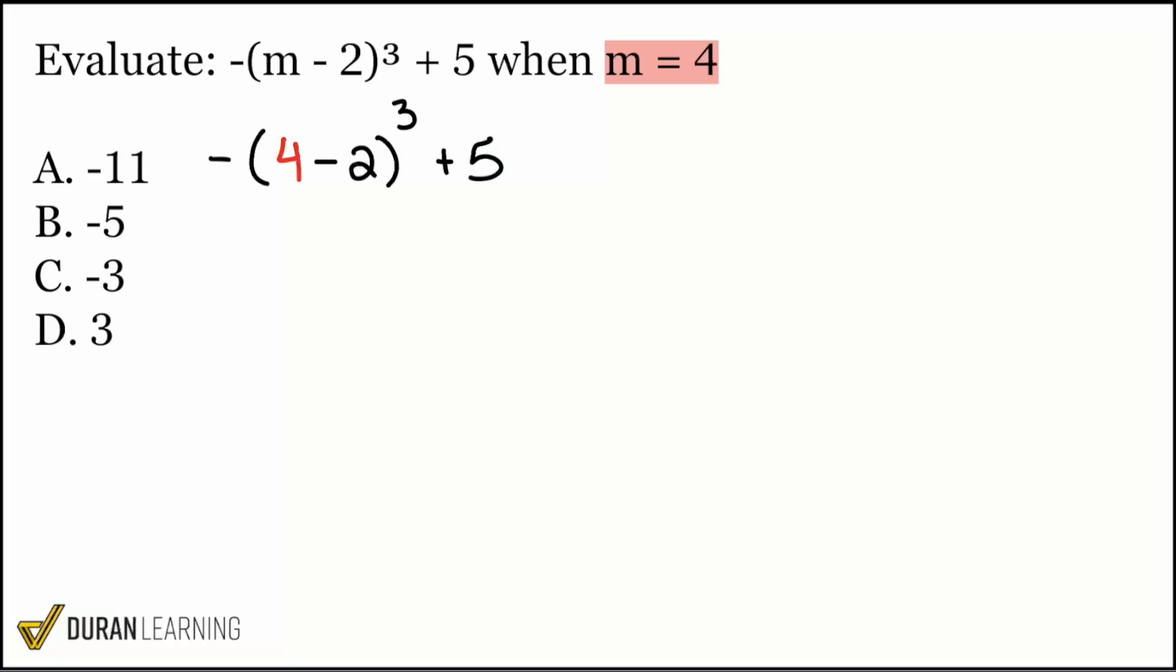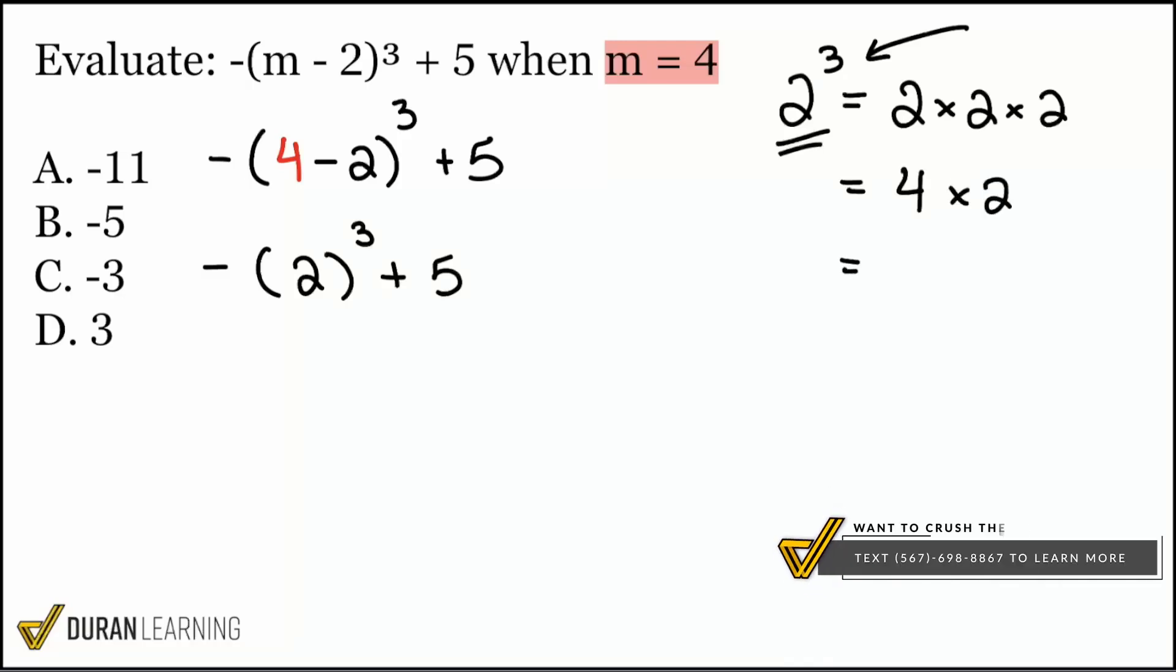So first step I'll do is I will take care of that parentheses, which is four minus two. So that ends up becoming two. And now we're going to take two to the power of three. So remember everyone, when we take anything to any power, this is the number that's being multiplied. And this is how many times you're writing that number. So this will be two multiplied by itself, three total times, which ends up becoming eight because two times two is four and four times two is eight.